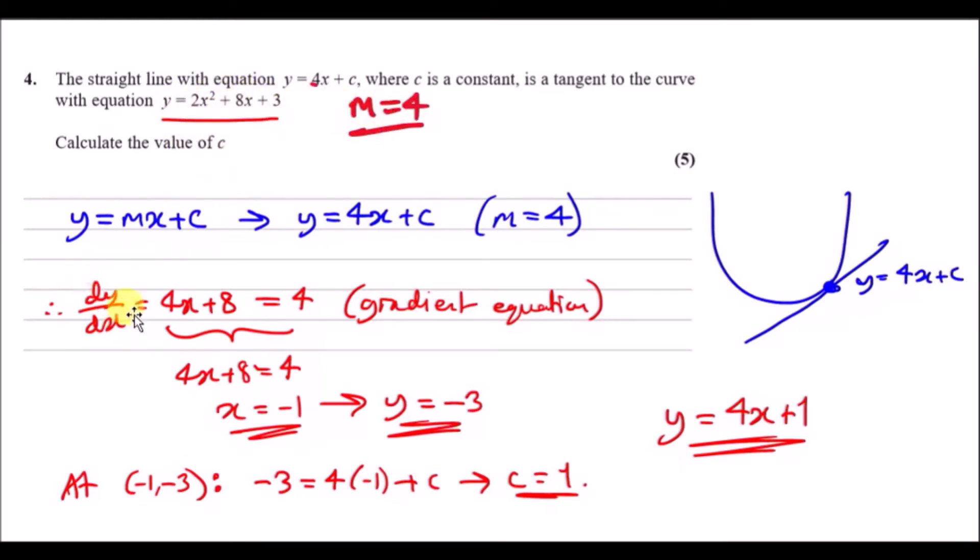So differentiating this equation carefully, you drop the power down to get 4x, differentiate 8x to get 8, and 3 disappears. Equating that to 4, you can solve to find x equals minus 1.